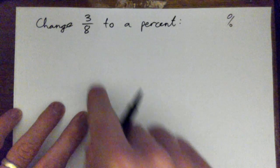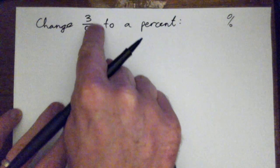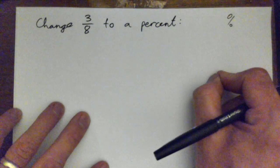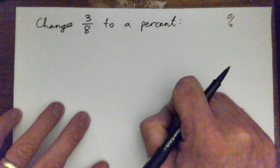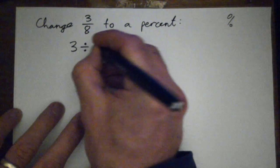One way to do it is to turn this into a decimal because if we turn the fraction into a decimal, then it's easy to turn it into a percent. Now three-eighths is three divided by eight.